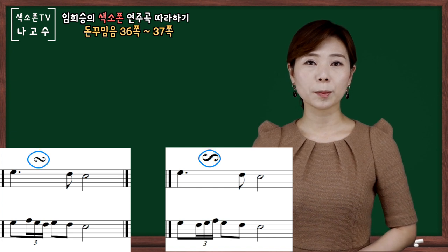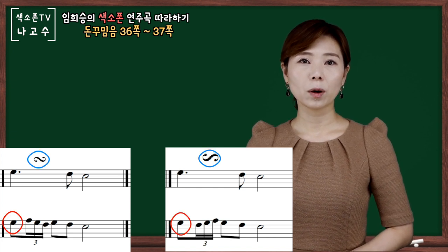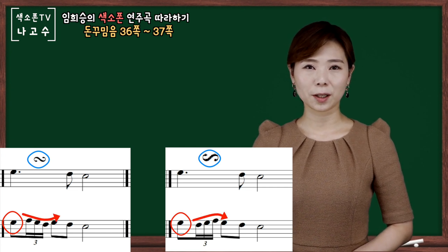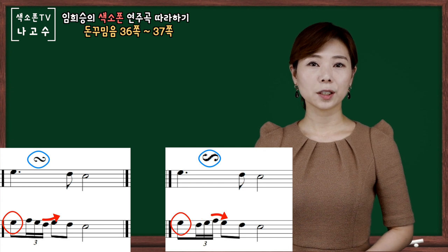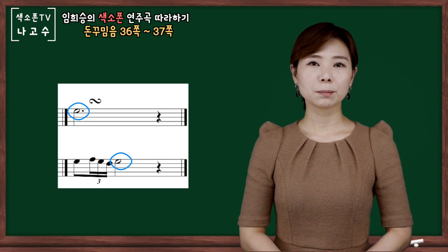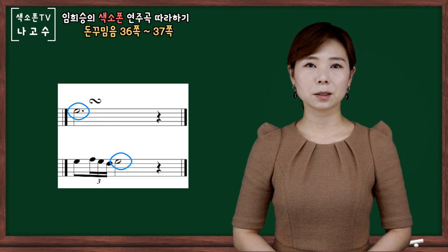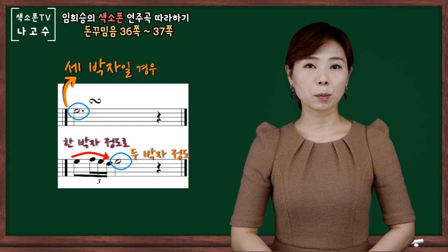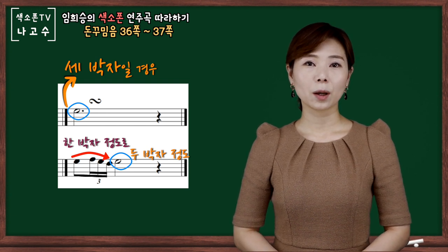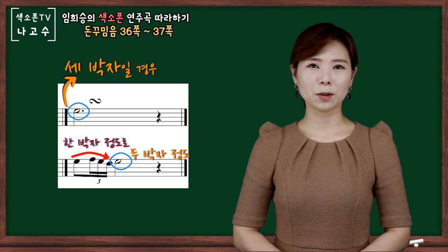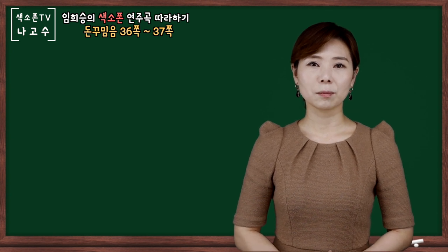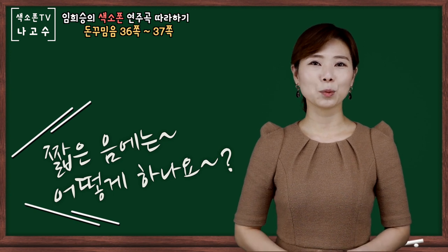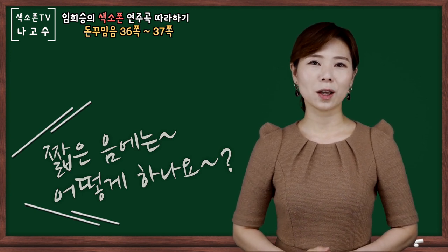음 뒤에 돈 꾸밈음이 그려져 있다면 원음을 시작하여서 4개의 음을 연이어서 연주하면 되겠습니다. 연주 시 주의하실 점은 주어진 박자 안에서 돈 꾸밈음을 해결하셔야겠습니다. 짧은 음 역시 돈 꾸밈음을 주어진 박자 안에서 해결하셔야겠습니다.